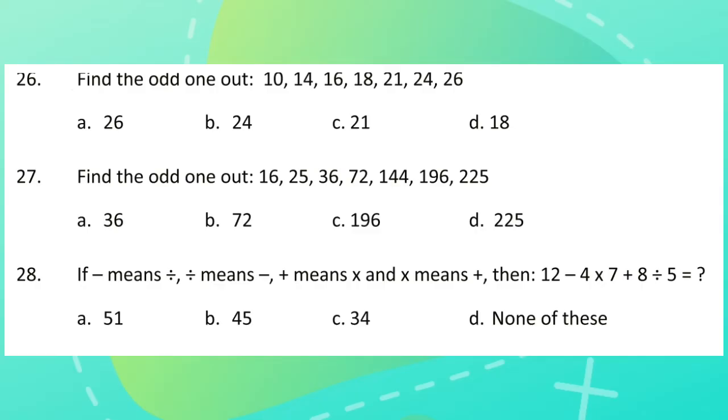Question 27: Find the odd one out: 16, 25, 36, 72, 144, 196, 225.